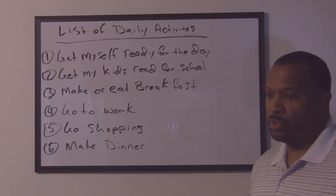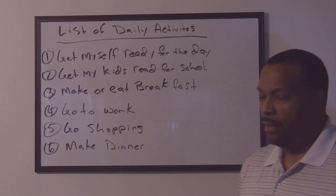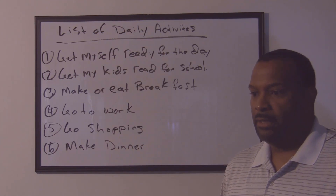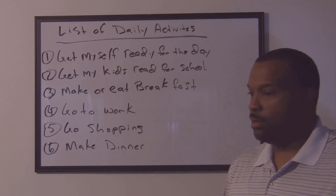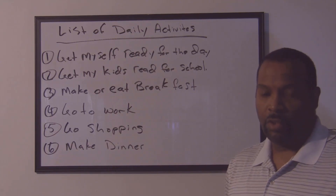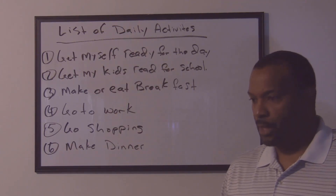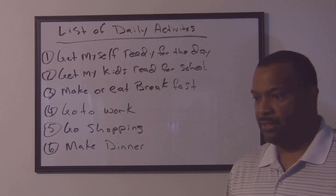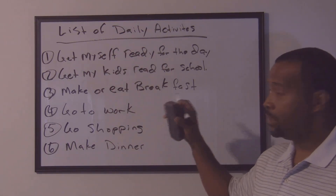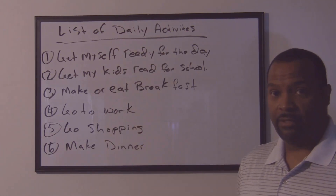We are going to start with page 70, and we are going to start working through our book and talk about time management. So let's jump on my computer and we're going to take a look at some of the activities in this book for Unit 6, starting on page 70. Let's go.